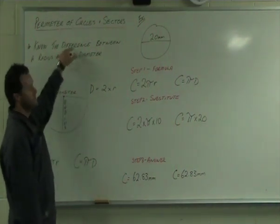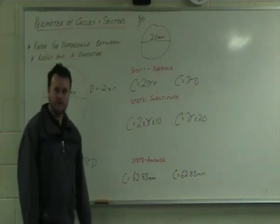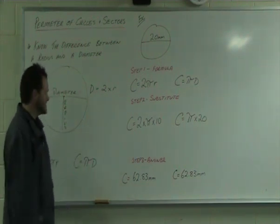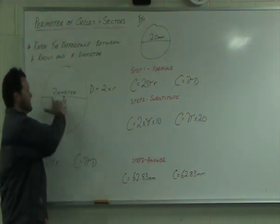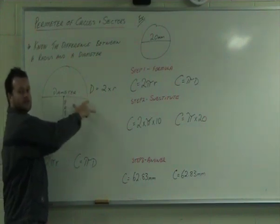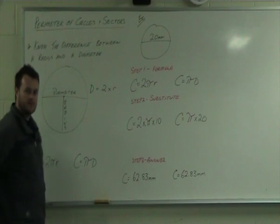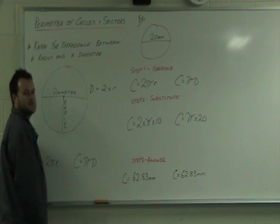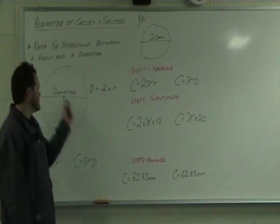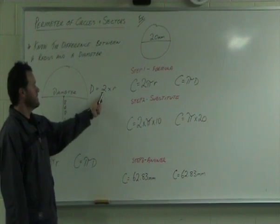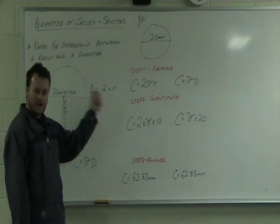The most important thing about dealing with circles is to know the difference between a diameter and a radius. The diameter goes from one side all the way to the other side through the centre point of the circle, and the radius goes from the centre point down to the outside of the circle. So the diameter D is equal to 2 times the radius.